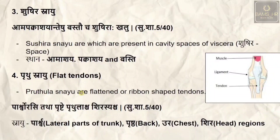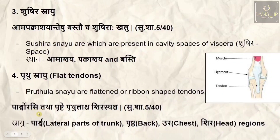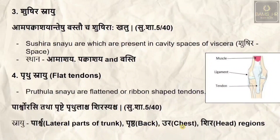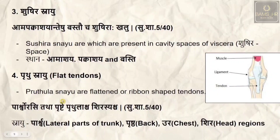The fourth type is pruthu snayu — flat tendons. Pruthu snayu are flattened or ribbon-like shaped tendons. The sloka states: parashvi urasi tatha prushte pruthu — the snayu present on the lateral parts of the trunk (parashva), the back (prushtha), the chest (ura), and the head (shira) are considered pruthu snayu.